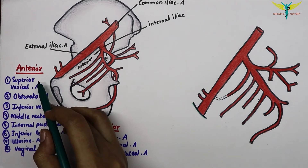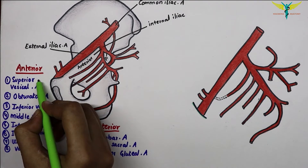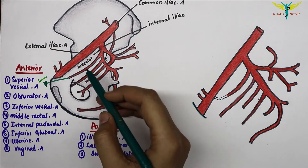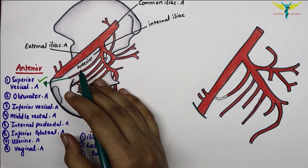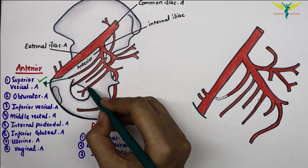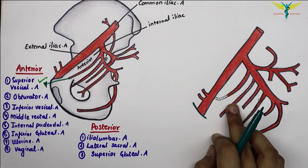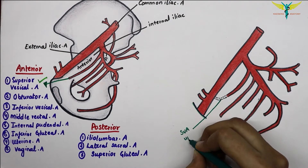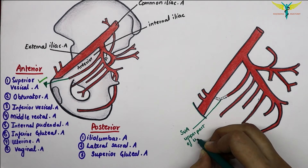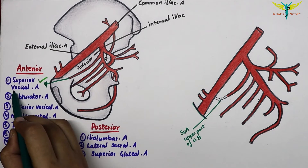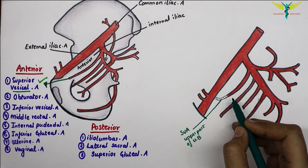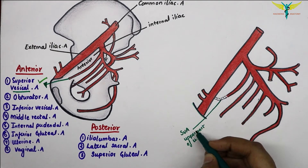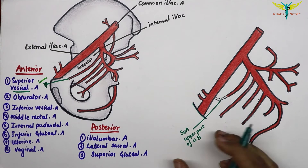The first artery of the anterior division is the superior vesicle artery. It is the persistent proximal part of the umbilical artery in the fetus. It runs forward and medially and supplies the upper part of the urinary bladder. It is crossed by the ductus deferens and sometimes gives a branch to it. Distally it continues as the medial umbilical ligament, representing the obliterated part of the umbilical artery.